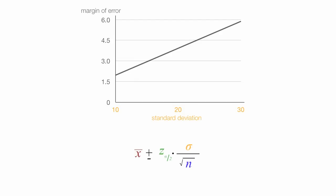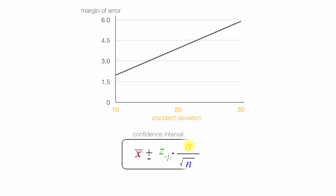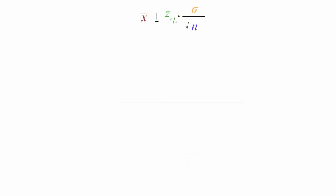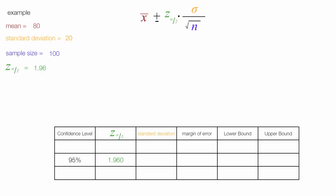I'm going to use the confidence interval equation to calculate margin of error and hold all the other variables constant, and I'll also calculate the confidence interval. Let's imagine that the mean is 80, the standard deviation to start is 20, the sample size is 100, and the confidence coefficient is 1.96. I'll put this into a table, starting with the standard deviation of 20.